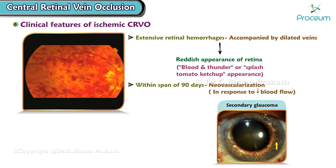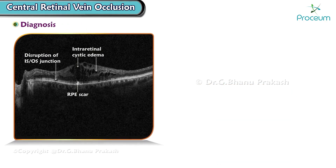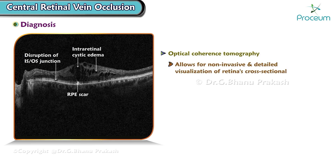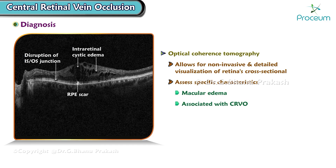Now we'll move on to the diagnosis. Diagnosing central retinal vein occlusion involves various techniques, one of which is optical coherence tomography. This imaging method allows for non-invasive and detailed visualization of the retina's cross-sectional images, and can assess specific characteristics such as macular edema and structural changes associated with central retinal vein occlusion.